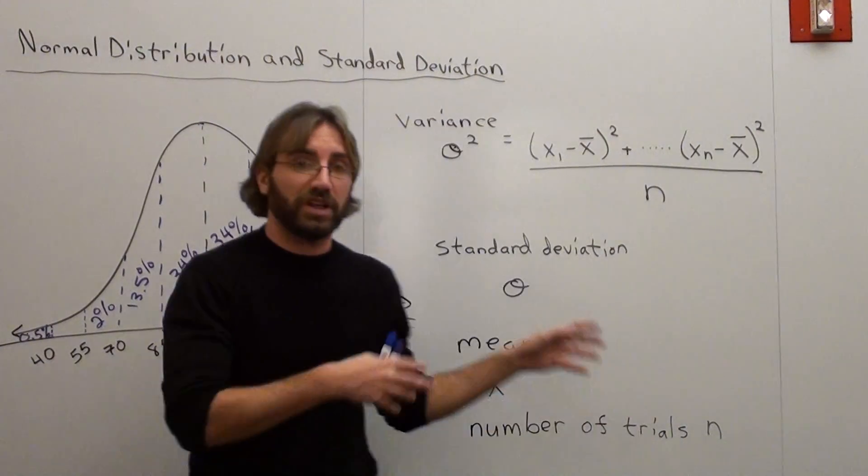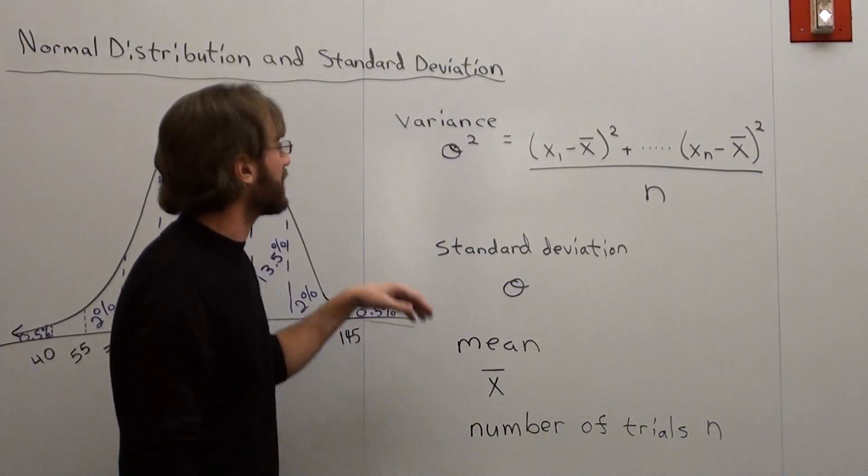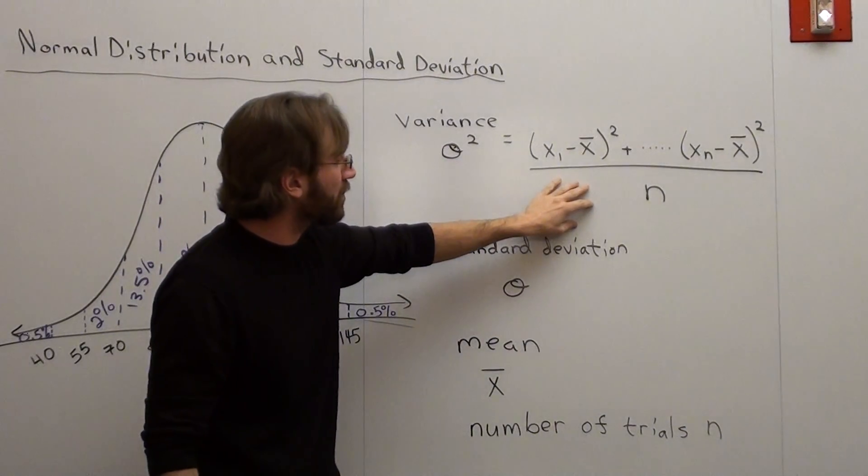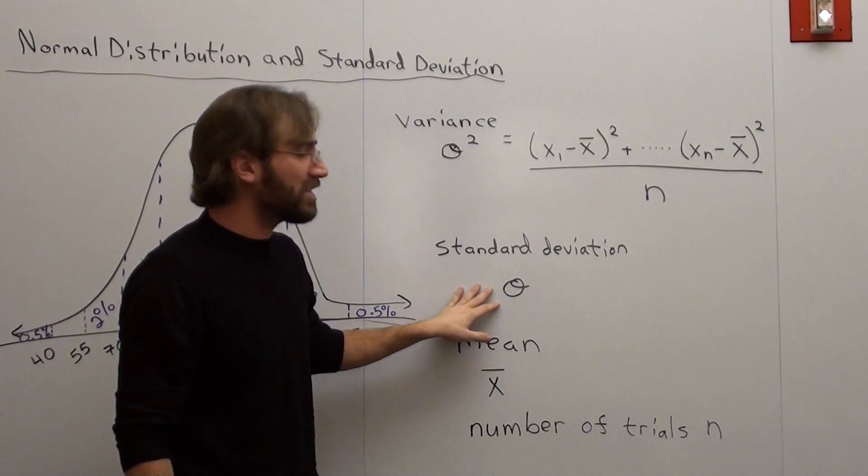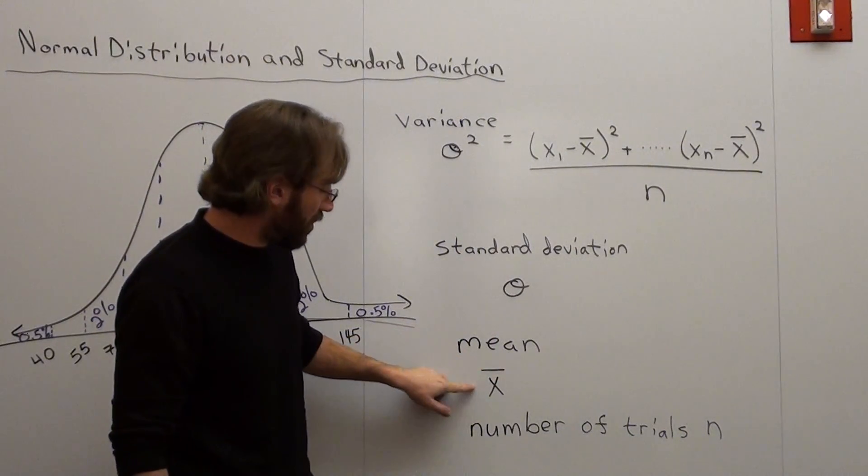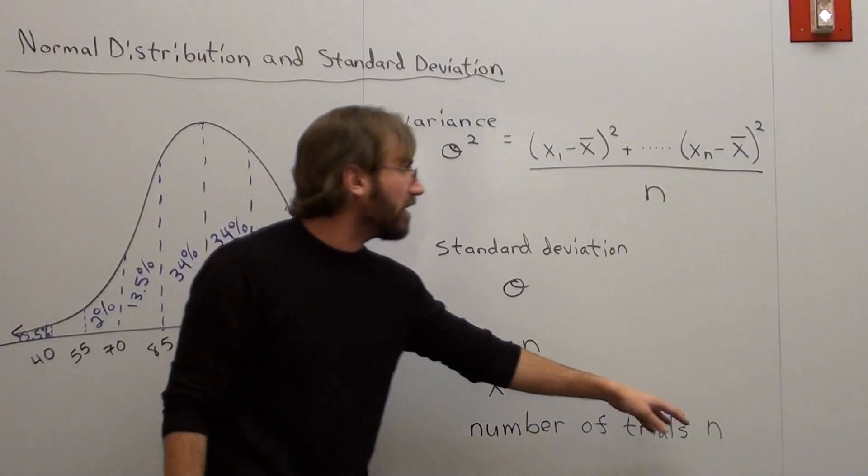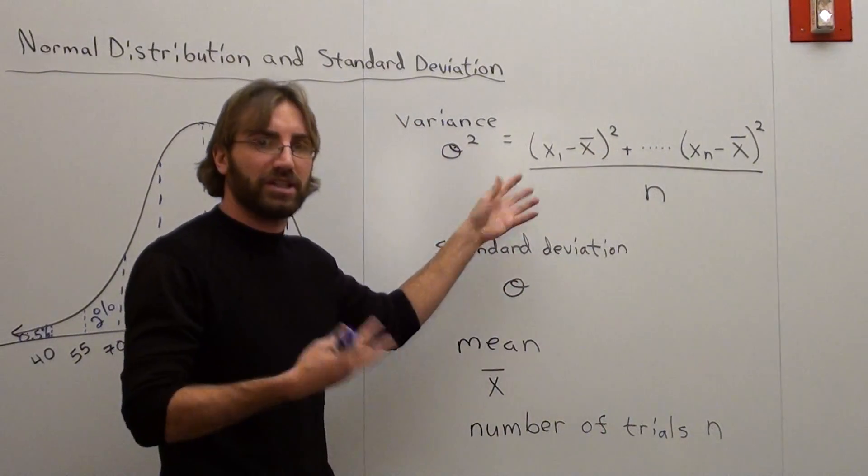The stuff over here is talking about what we're going to do in the next lesson. I'll preface it anyways. Variance is noted as sigma squared, and this is the formula for it. Standard deviation is sigma. Mean can be notated with an x with a line over it, we call it x hat, and number of trials is n. I'll explain that as we go along, but it's better to have a logical concept of what's going on here.